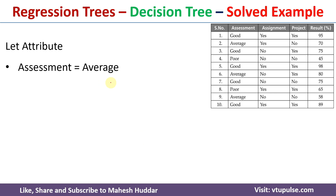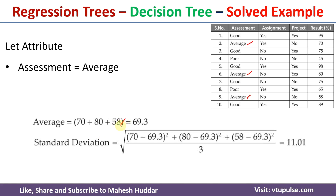Similarly, for assessment = average, there are three instances. The average is 69.3. The standard deviation is the square root of [(70 − 69.3)² + (80 − 69.3)² + (58 − 69.3)²] divided by 3, which equals 11.01.